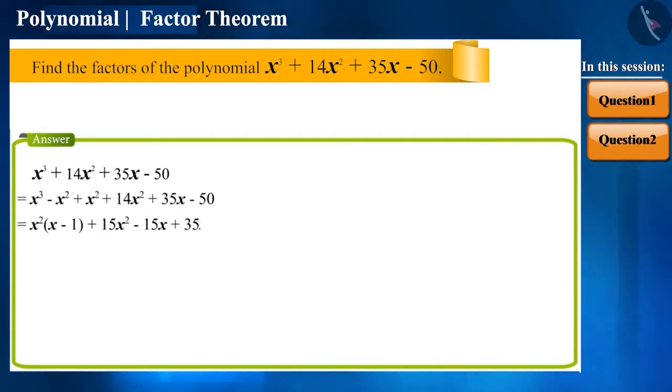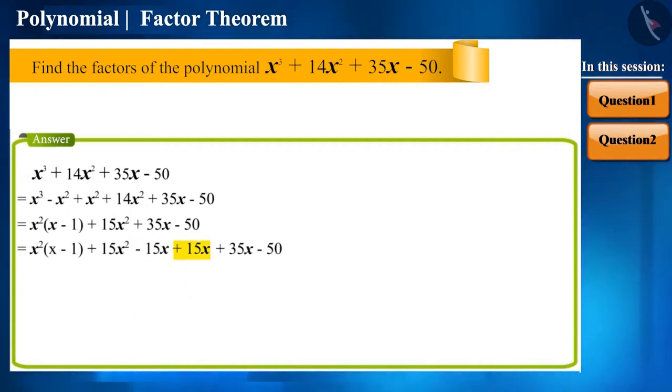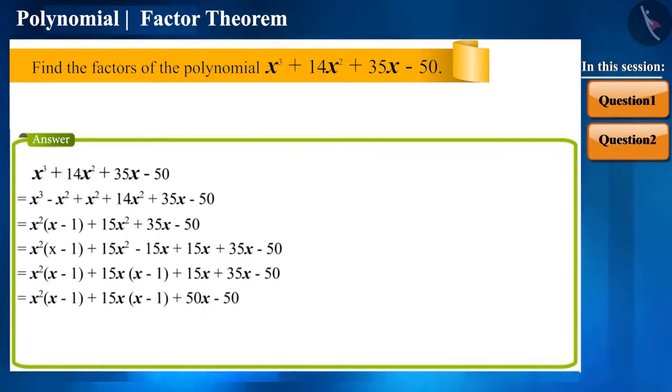Here, if the first term was minus 15 x, then by taking 15 x common, we could write like this 15 x of x minus 1. So let's subtract and add 15 x once. Now, again 15 x and 35 x will get added up to become 50 x. Now, taking 50 common, we can write x minus 1. After this, by taking x minus 1 common,